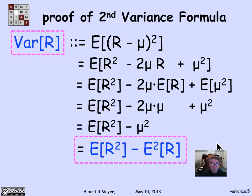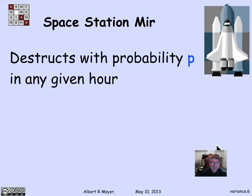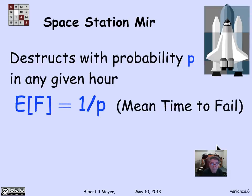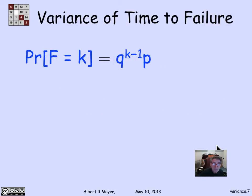The first result about factoring out a and squaring it follows from a similar proof. Now let's look at the space station mirror example again, which we used for calculating mean time to failure. With probability p the mirror will be hit by space debris in any given hour, so the expected number of hours to failure is 1/p. We're asking: what's the variance of f, the number of hours to failure?